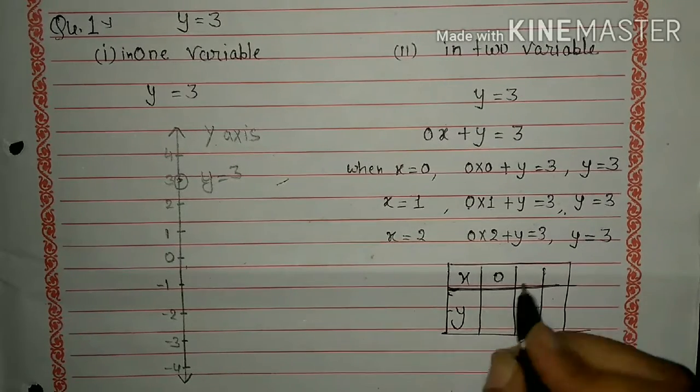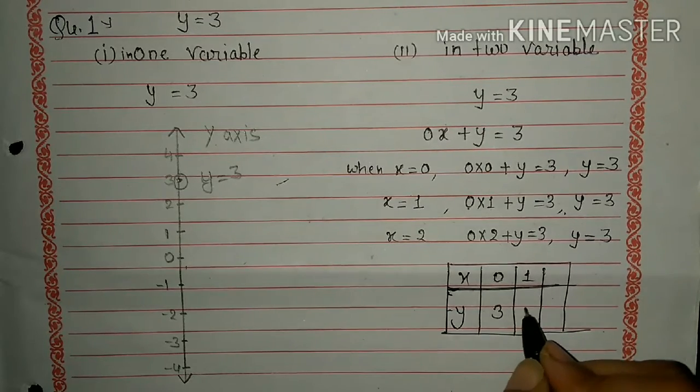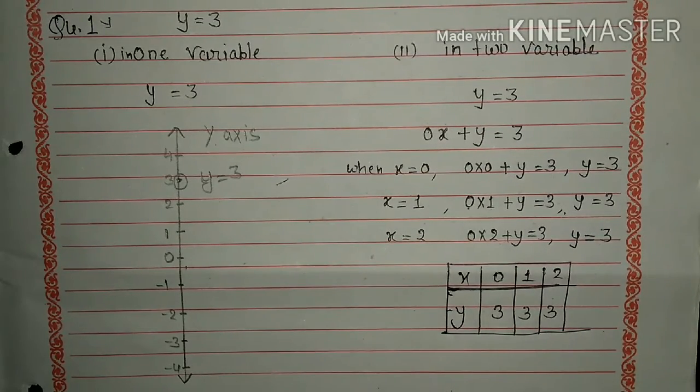We put 0, so we get 3. The coordinates are (0,3), (1,3), (2,3).